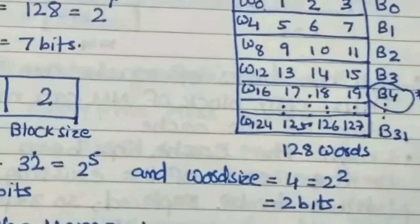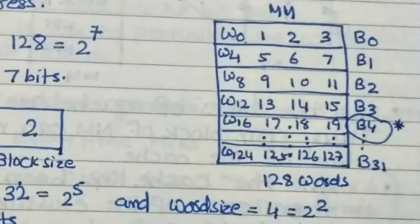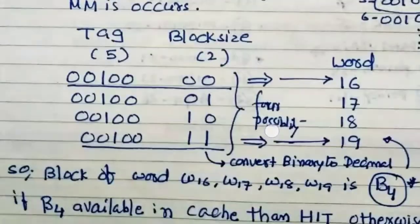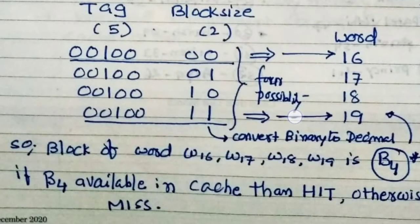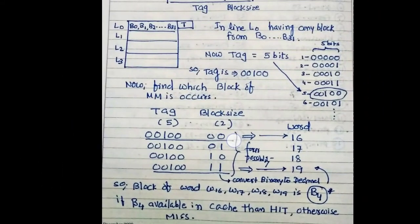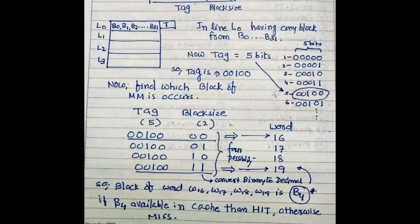As we see here, W16, 17, 18, 19 are in B4. So if B4 is available in cache, then hit occurs. Otherwise miss occurs. This way we can understand fully associative mapping.